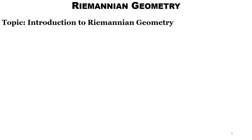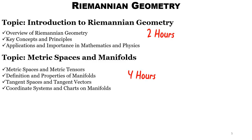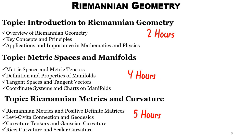First, a two-hour introduction to Riemannian geometry covering key concepts, principles, applications, and importance in mathematics and physics. Then metric spaces of manifolds — metric tensors, properties of manifolds, tangent spaces, tangent vectors, and coordinate systems. Then the Riemannian metric covering the Levi-Civita connection, extensively used in general relativity, geodesics, curvature tensors, Gaussian curvature, Ricci curvature, and scalar curvature. The first three topics together would take around eleven hours of study.